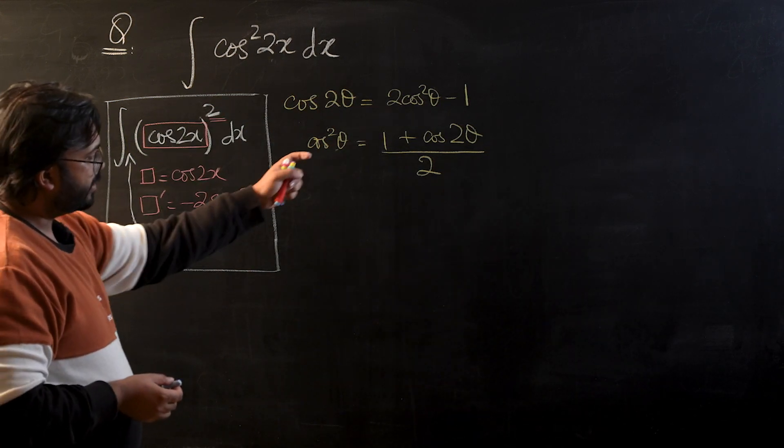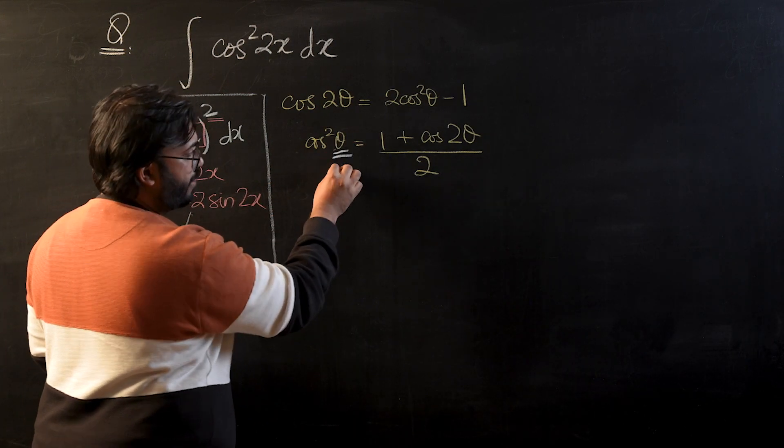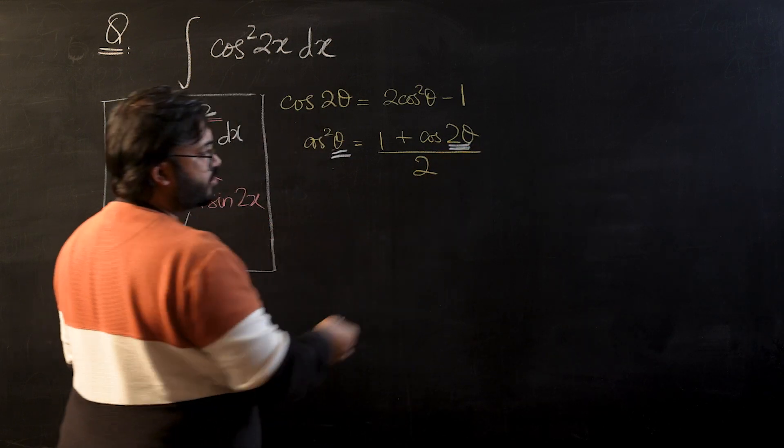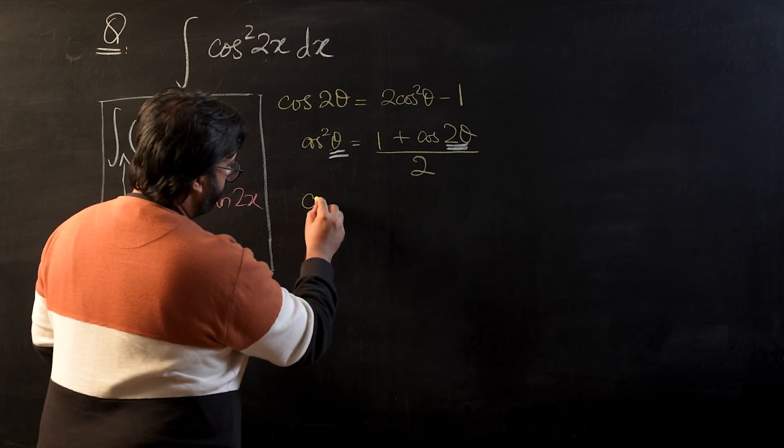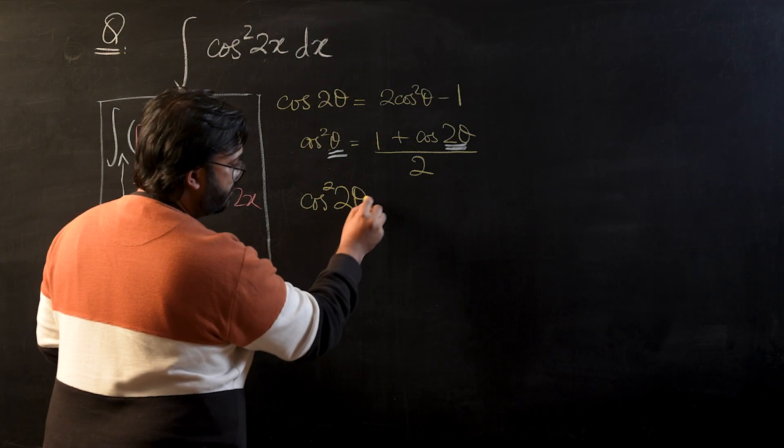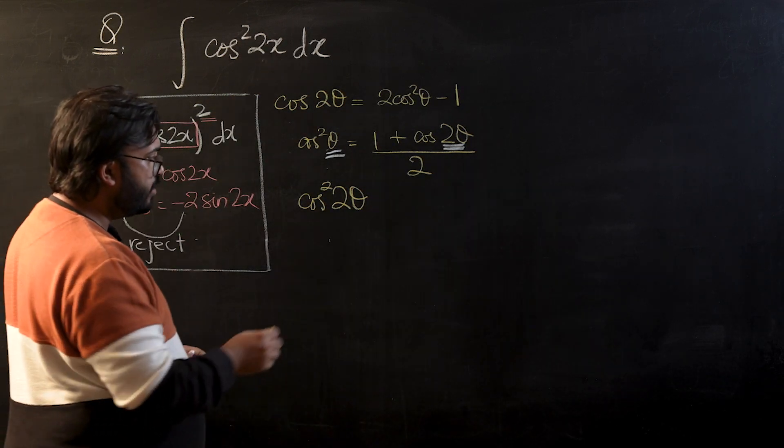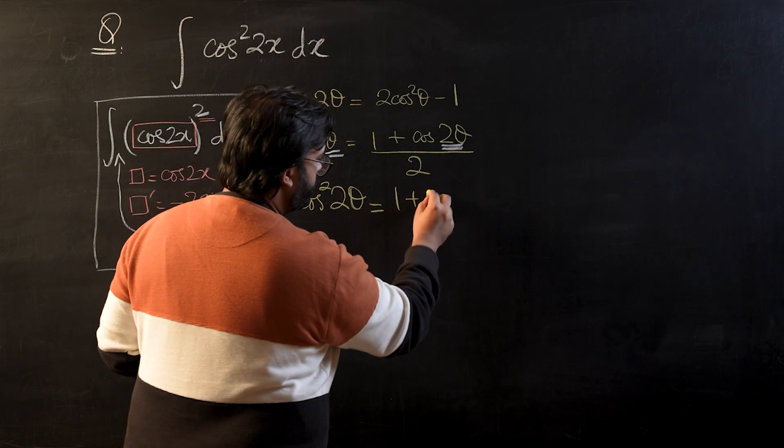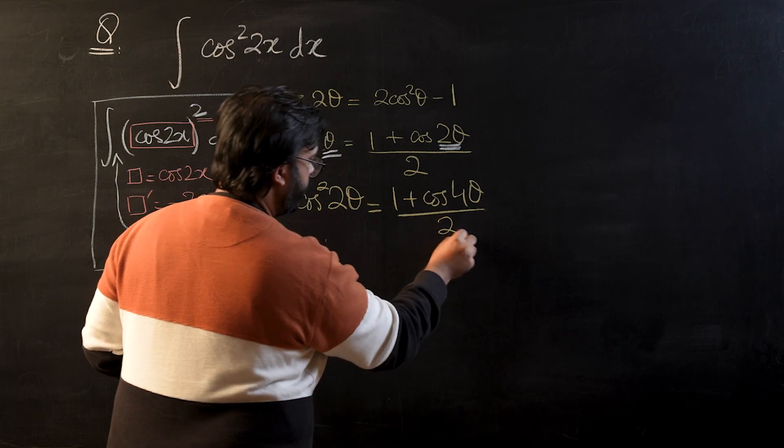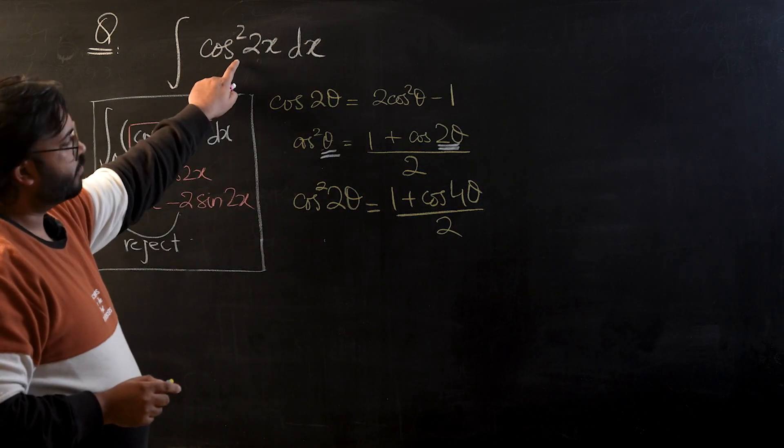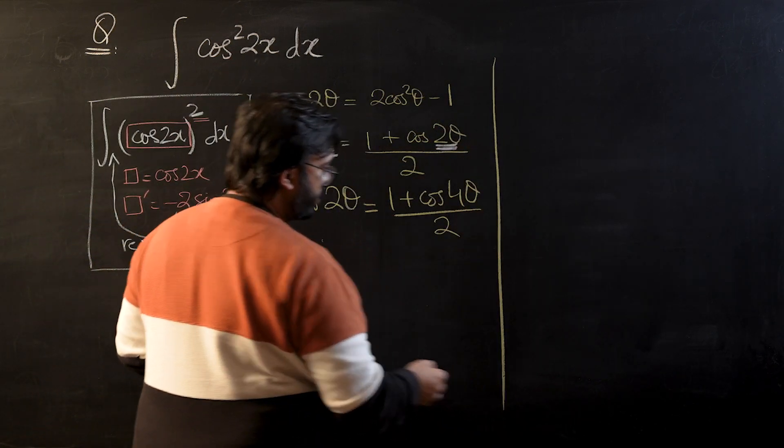If I want to convert this angle to 2θ, what I will have to do is: if I make this 2θ, then since this is a double angle identity, this will become 4θ. So I am going to write cos²(2θ) - I will later on start writing it as 2x because x was the variable - will be equal to (1 + cos(4θ))/2. Now we have a substitution that can work for this question.